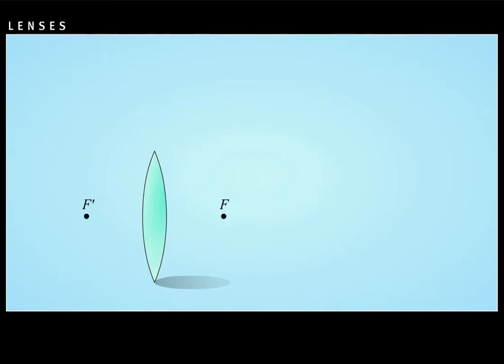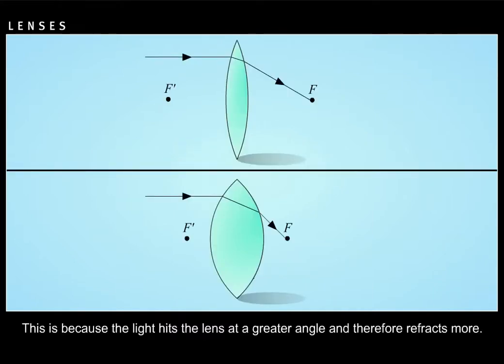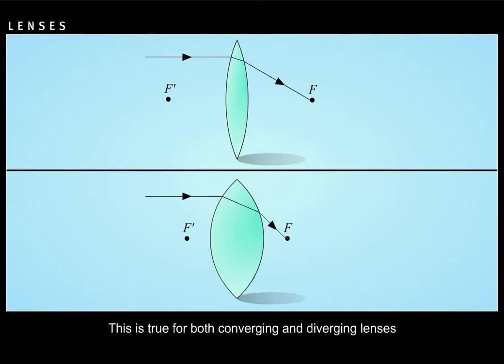Correct. As the curvature increases and the lens gets thicker, the focal length decreases. This is because the light hits the lens at a greater angle and therefore refracts more. This is true for both converging and diverging lenses.